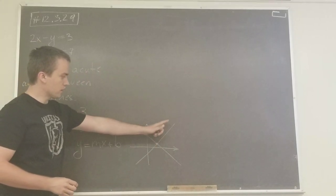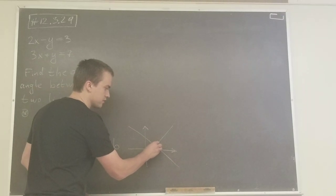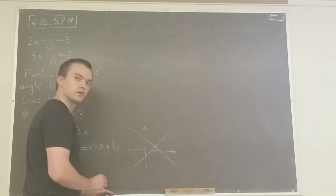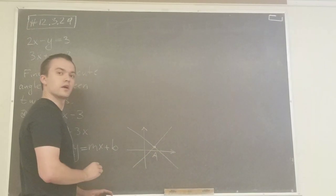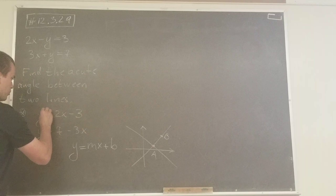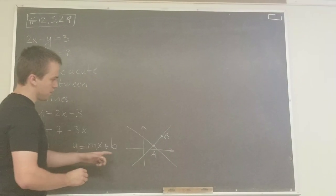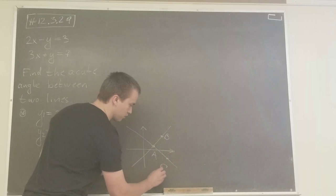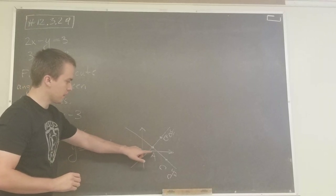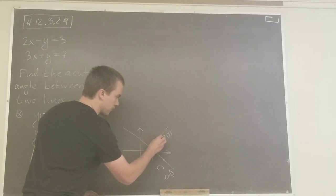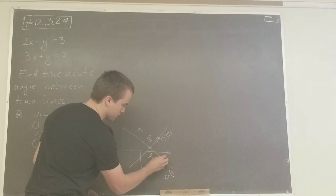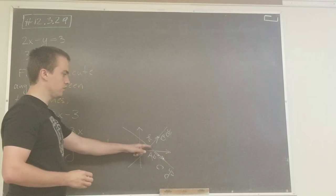If one line is increasing and another is decreasing, it means we can find the intersection point. I'm going to find this intersection point and name it point A. Then I'm going to find one point on the first line — let's call it y1 — and name it point B, and find a point C on the second line y2. When I have three points I'll create vector A and vector B.